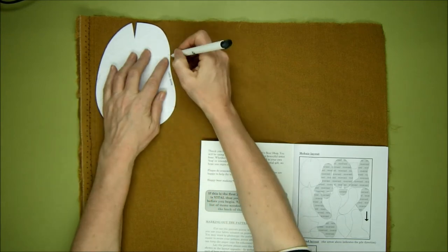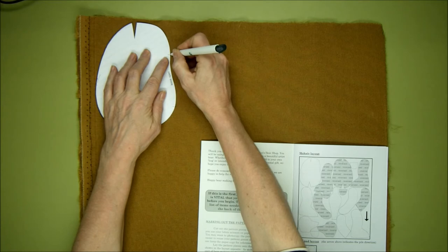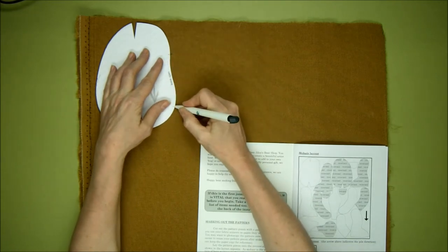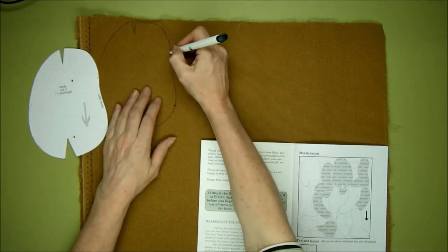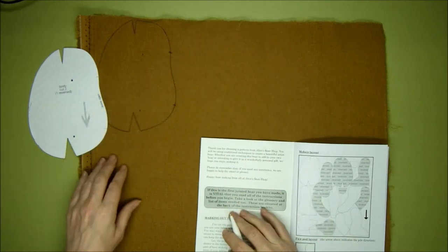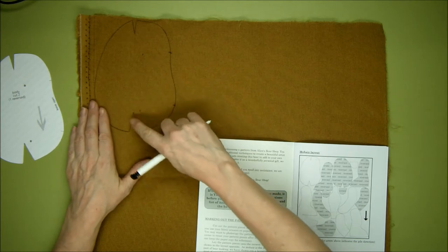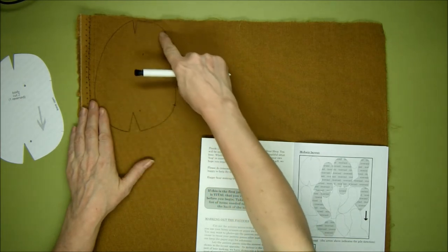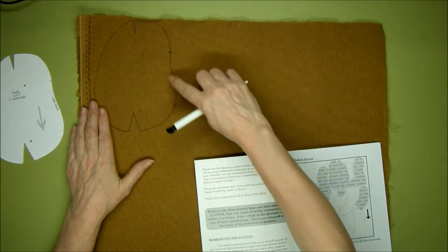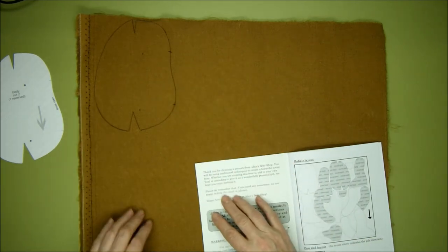And we're also going to mark the opening at the back that we'll leave open for stuffing the bear. So mark this on the outside and then make sure you mark it onto the pattern so when you cut it out, it's still evident. So there are our cotter pin markers, our darts all the way around, and our openings at the back.